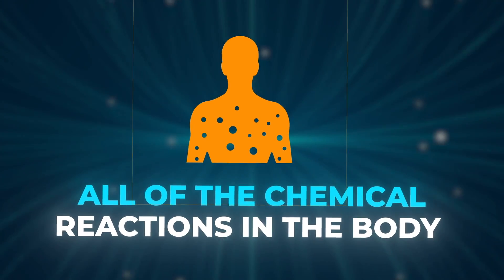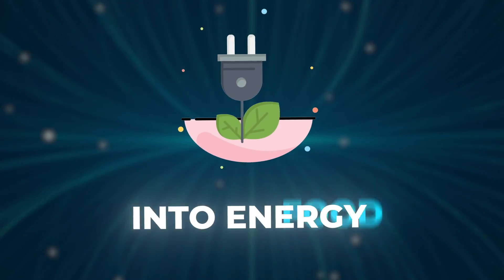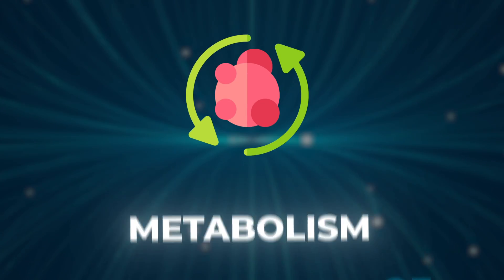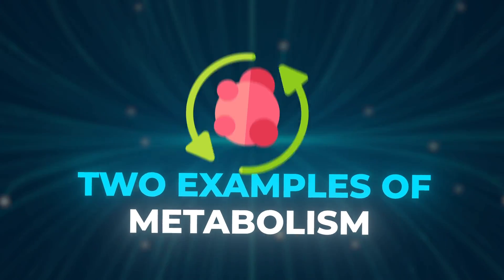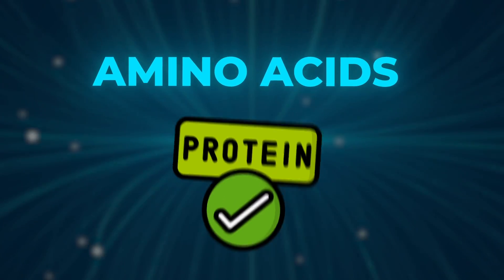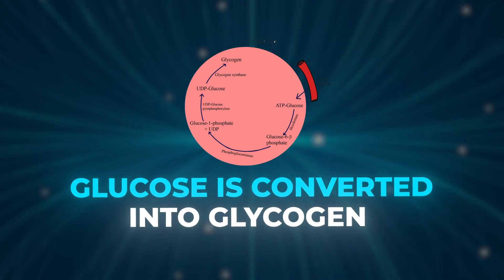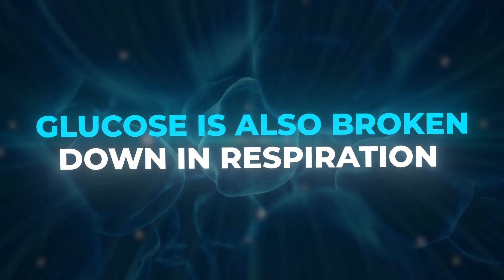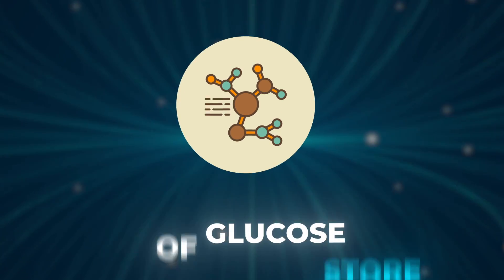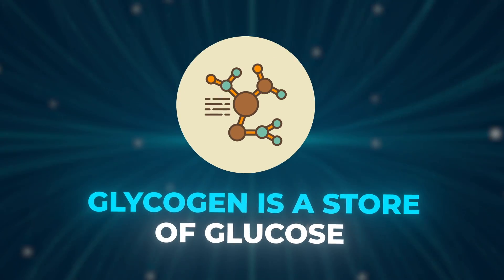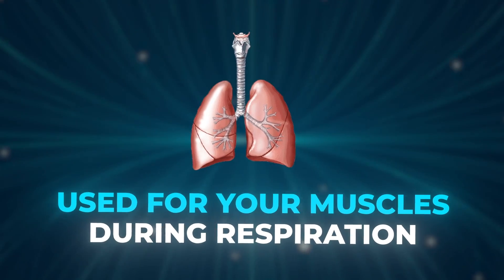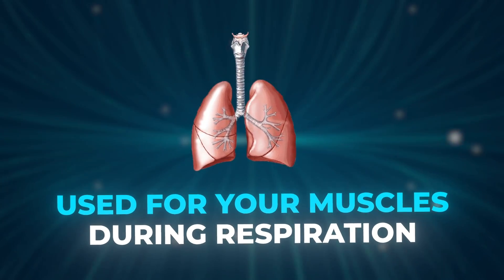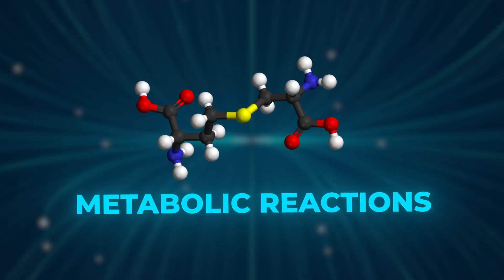Another topic that I think could come up is metabolism. Remember the definition of metabolism is all of the chemical reactions in the body's cells that change food into energy — so learn this definition. Two examples of metabolism that are very important to learn: amino acids are used to make proteins, and glucose is converted into glycogen. Glucose is also broken down in respiration. They could also ask you about the importance of this process — you could say that glycogen is a store of glucose and can be used for your muscles during respiration, and also that energy is released by respiration in cells to be used for further metabolic reactions.